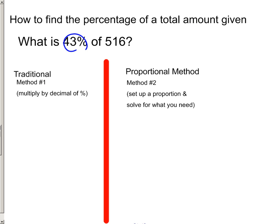What is 43% of 516? Using our traditional method number 1, we would just say turn that percentage into a decimal, and then we're going to times it by the full number. So what's 43% of 516? 221 and 88 hundredths. So 221 and 88 hundredths, not an easy number, not something that you can just kind of look at and know like we did with 80% of 10.